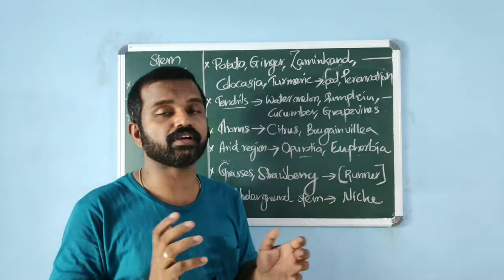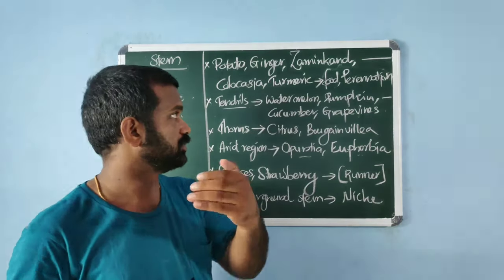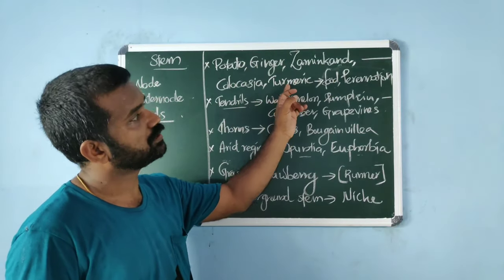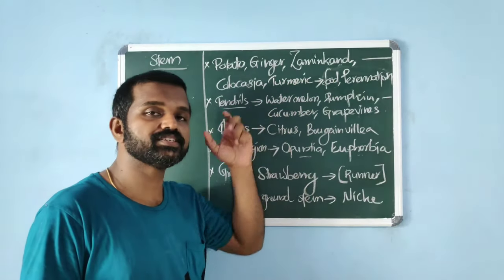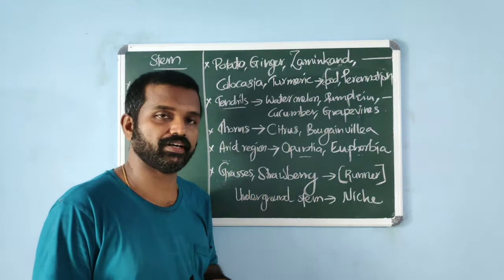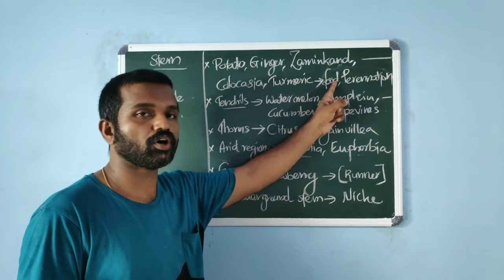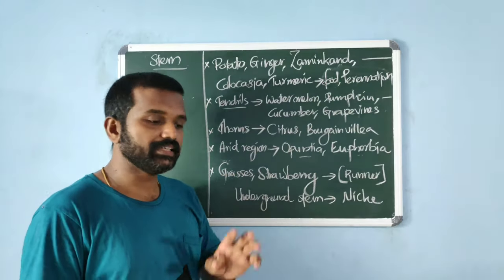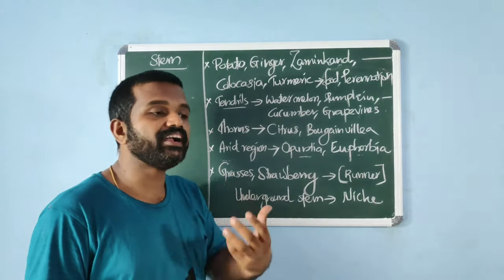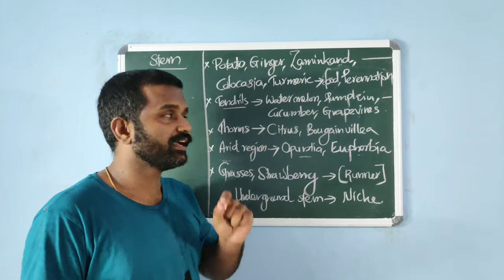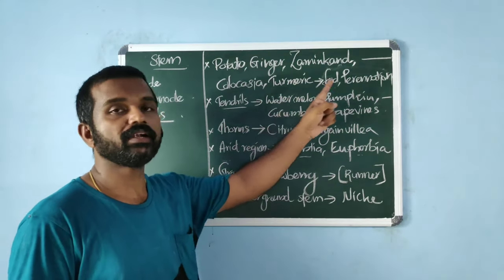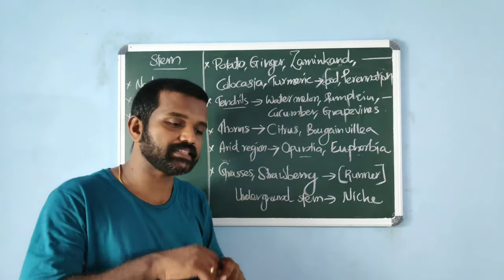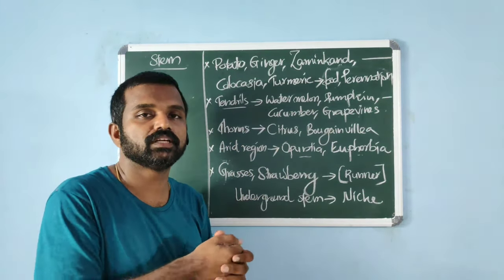Stems are modified to carry out various functions. In potato, ginger, zaminkand, colocasia, and turmeric, the underground stem is modified for food storage and to act as an organ of perennation — to tide over unfavorable conditions. In watermelon, pumpkin, cucumber, and grapevines, stem tendrils are seen where the axillary bud is modified to provide mechanical support.